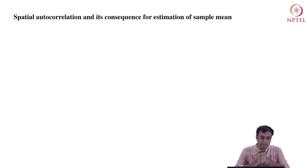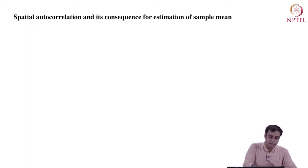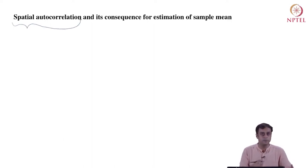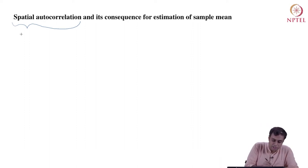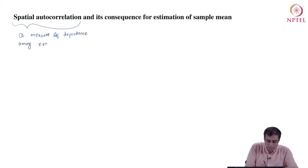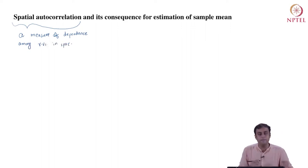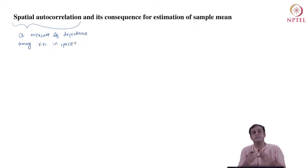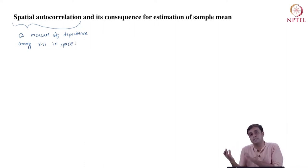The first entity of discussion today is the idea of spatial autocorrelation. What is spatial autocorrelation? Spatial autocorrelation is a measure of dependence among random variables in space. Till now, we have talked about something like distance and spatial dependence with examples. Now we are coming to a point where we are providing a measure for it. This measure will likely depend on, or be a function of, the distance between random variables in space.